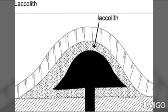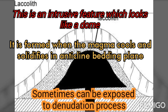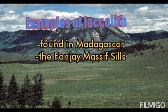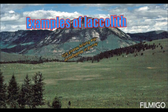The horizontal forming rocks are the sills, which are referred to as fine. The third feature is the laccolith. A laccolith is an intrusive feature which looks like a dome. It is formed when the magma cools and solidifies in anticline bedding planes and can sometimes be exposed through the erosion process. Examples of laccoliths are found in Madagascar.